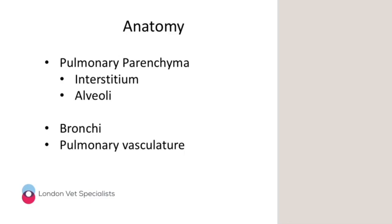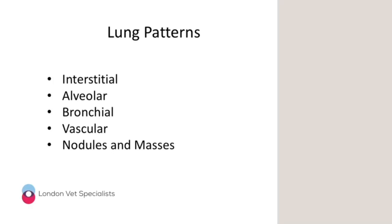As well as knowing where the lung lobes are, we need to know what the lung consists of, and that can help us understand why we use lung patterns to describe radiographic changes. The pulmonary parenchyma is made up of the interstitium — the connective tissue between all the other structures within the lung — along with alveoli, bronchi, and vessels. Keeping that in mind helps us understand why we use the terms we use to describe the lung patterns.